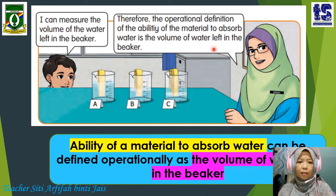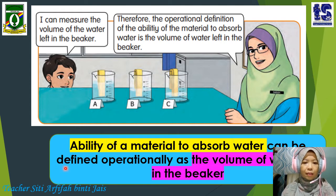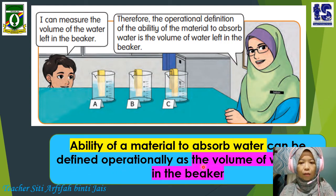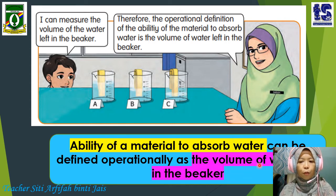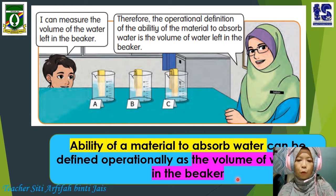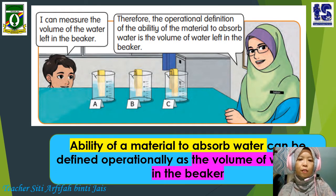So, how can we define the ability of a material to absorb water? The statement is: the ability of a material to absorb water can be defined operationally as the volume of water left in the beaker. The yellow colour refers to what we investigate — the ability of a material to absorb water — while the purple colour refers to what we measure. The least water left in the beaker means the material has the highest ability to absorb water, while the highest volume of water left means the lowest ability to absorb water.